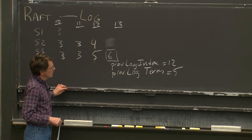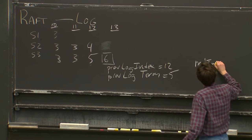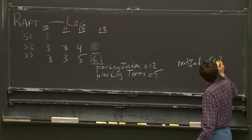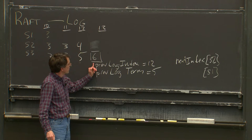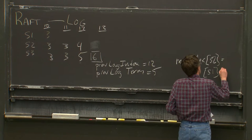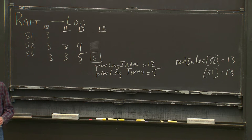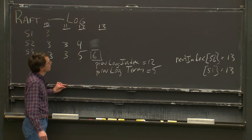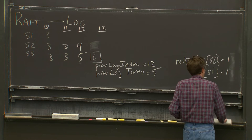The leader sees these two rejections and is maintaining a next index field, one for each follower — a next index for server 2 and a next index for server 1. Since the leader was sending out information about slot 13, the next indexes for both followers must have started at 13, which would be the case if the leader had just restarted. Figure 2 says next index starts at the end of the new leader's log. In response to errors, the leader decrements its next index field.